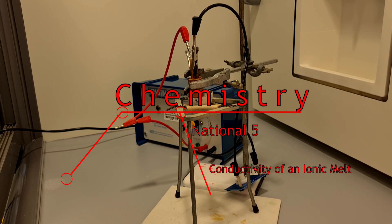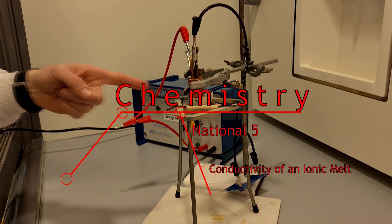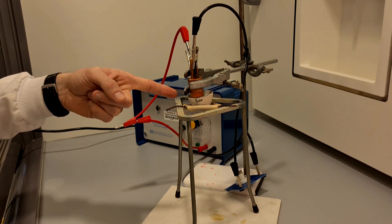So in this experiment we're going to test the conductivity of an ionic melt. In this crucible here we have some zinc chloride powder.